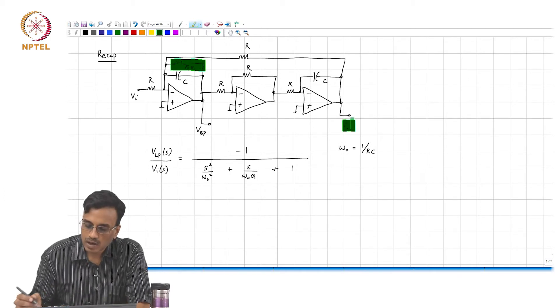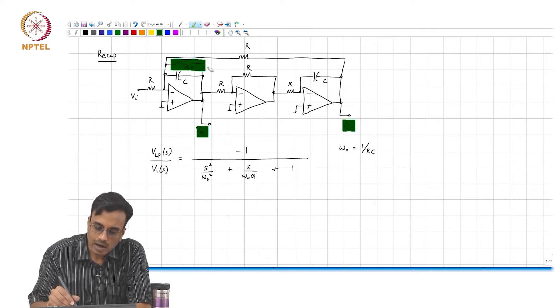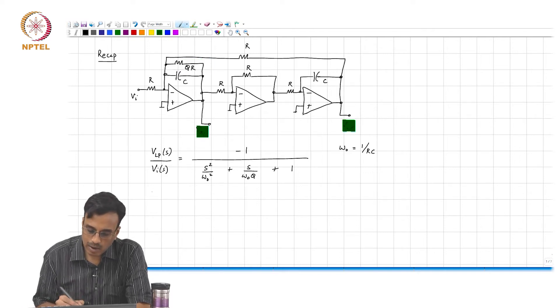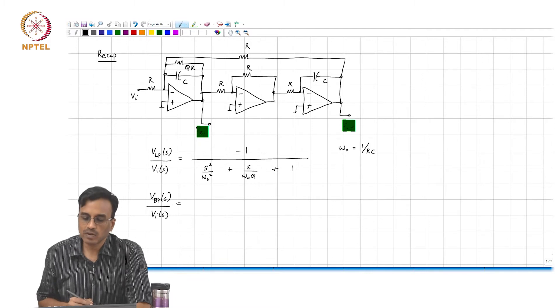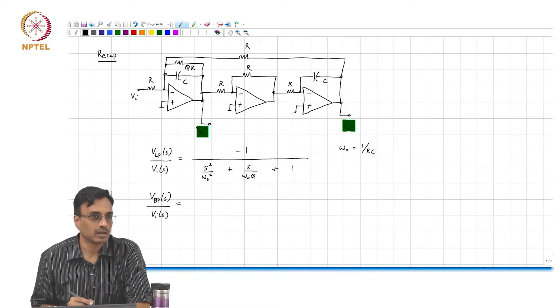This is the low pass output and this is the band pass output, and what comment can we make about the band pass transfer function v b p by v i of s. Is that an inverting band pass or is it a non-inverting band pass?